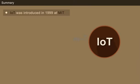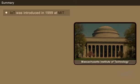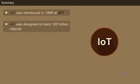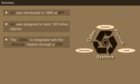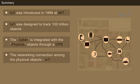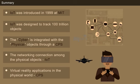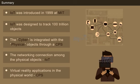Summary: IoT was introduced in 1999 at MIT, that is Massachusetts Institute of Technology. IoT was designed to track 100 trillion objects. The cyber is integrated with the physical objects through a CPS. The networking connection among physical objects is emphasized by IoT, whereas the exploration of virtual reality applications in the physical world is emphasized by CPS.